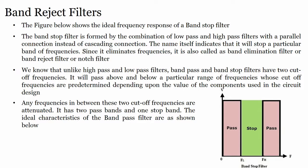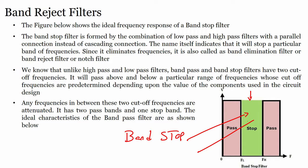First, let us understand from the theoretical point of view what exactly band reject filters are and how they can be implemented. Looking at the figure on screen, the green-colored band represents frequencies that will not be allowed to pass. That is why this stop band is called a band stop — this filter is also called a band stop filter or band reject filter.